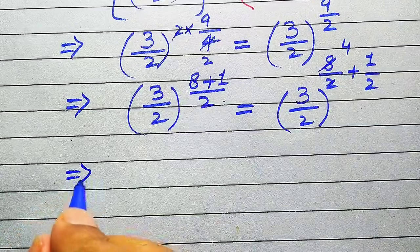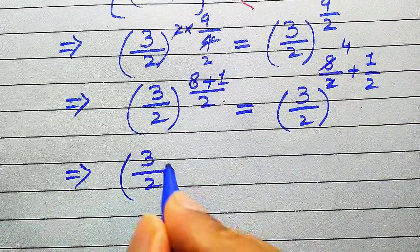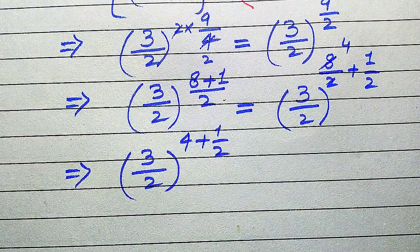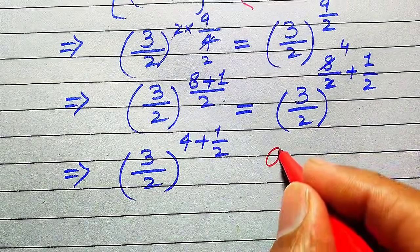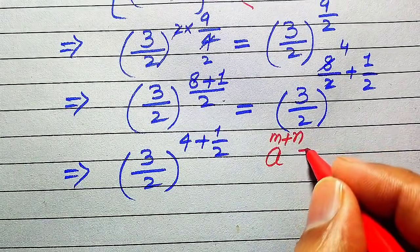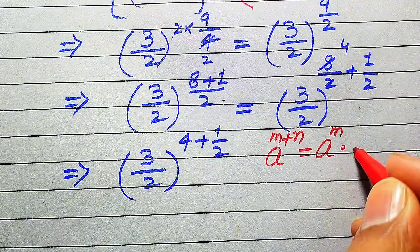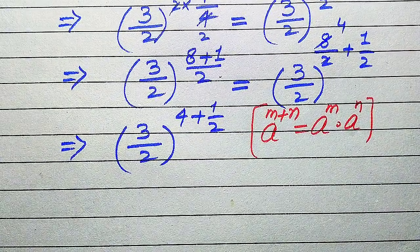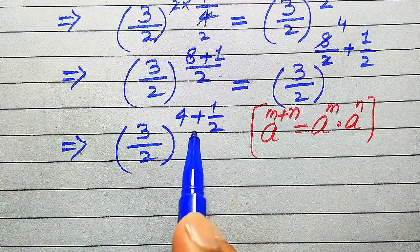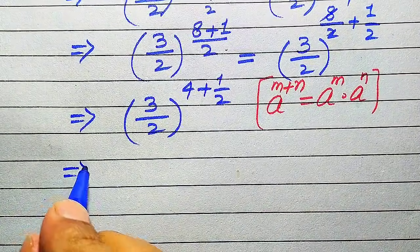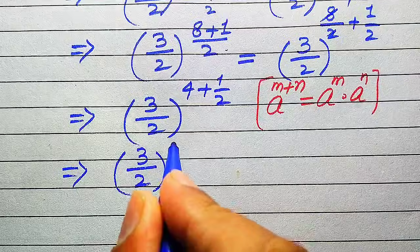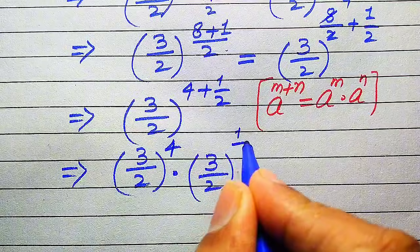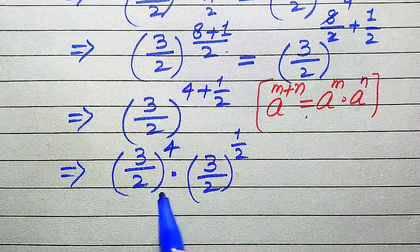Since 2 times 4 equals 8, this becomes (3 divided by 2) to the power of 4, plus 1 divided by 2. In the next step we use another exponential law: a to the power of m plus n equals a to the power of m multiplied by a to the power of n. According to this rule, we break the sum and write the terms as (3 divided by 2) to the power of 4, multiplied by (3 divided by 2) to the power of 1 over 2.